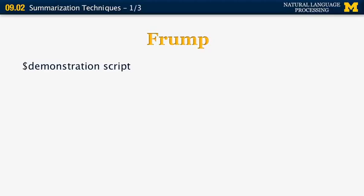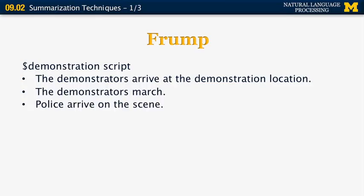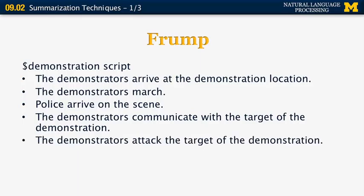Here's an example: one of his scenarios is the demonstration category. The script for that category involves the following events: demonstrators arrive at the location, then they march, then police arrives on the scene, the demonstrators communicate with the target of the demonstration — for example, a mayor or politician — then they attack the target, then the police, and so on. This is a fairly specific scenario that when it matches an existing news story is very valuable, but there's only so far you can go with this approach given the wide diversity of event types in the news. Nevertheless, this paper was highly influential for the summarization and knowledge representation communities.